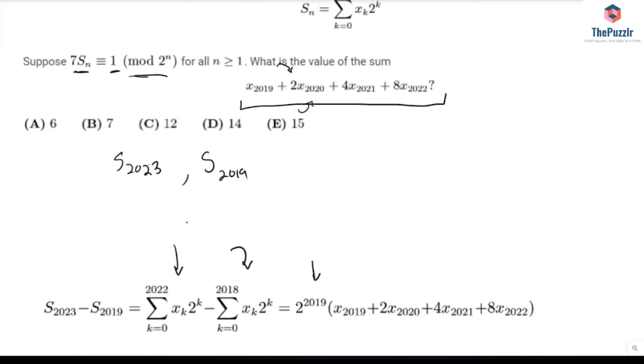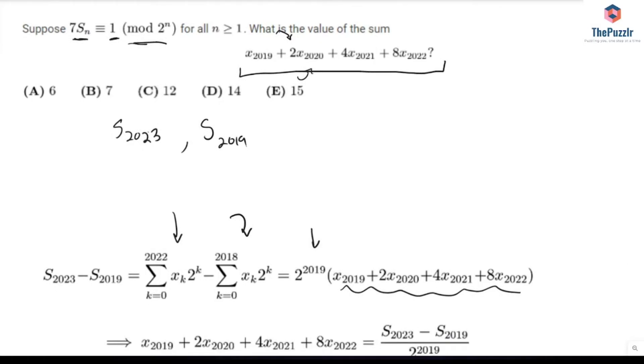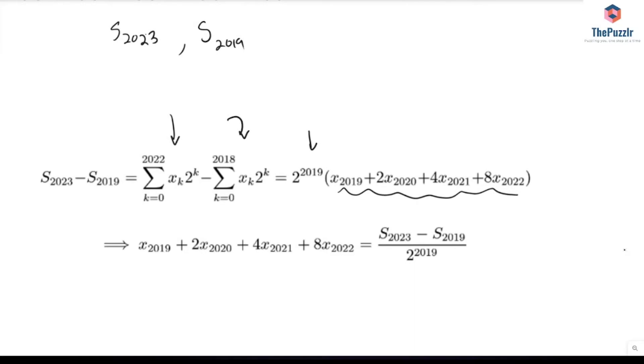Scrolling down, we get that from the definition this is the first sum, from the definition this is the second sum. And a lot of the stuff factors out. We can actually factor out 2 to the power of 2019 and then the xk's would cancel out. If we can find this, we've solved the problem.